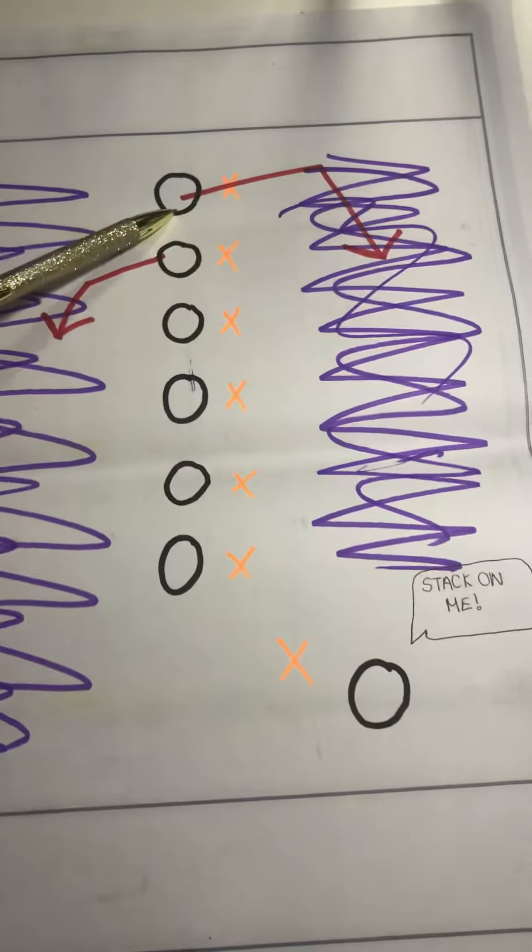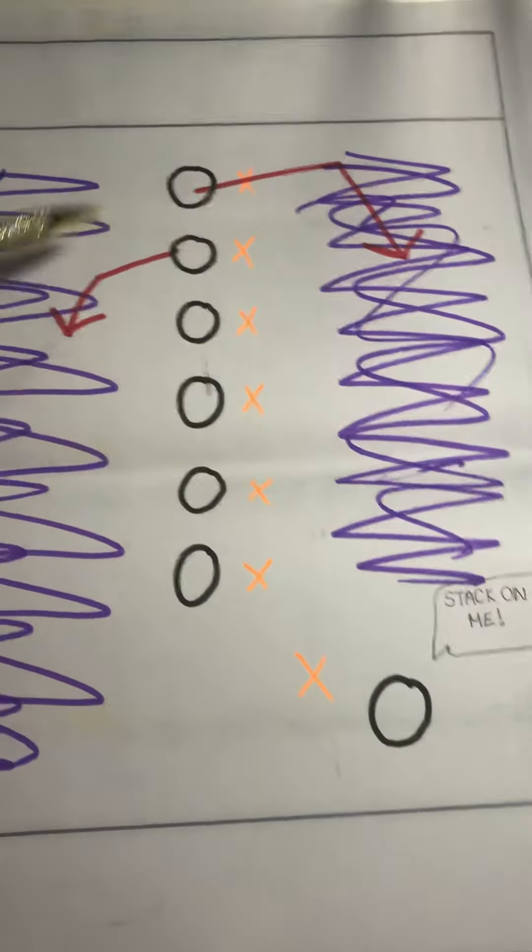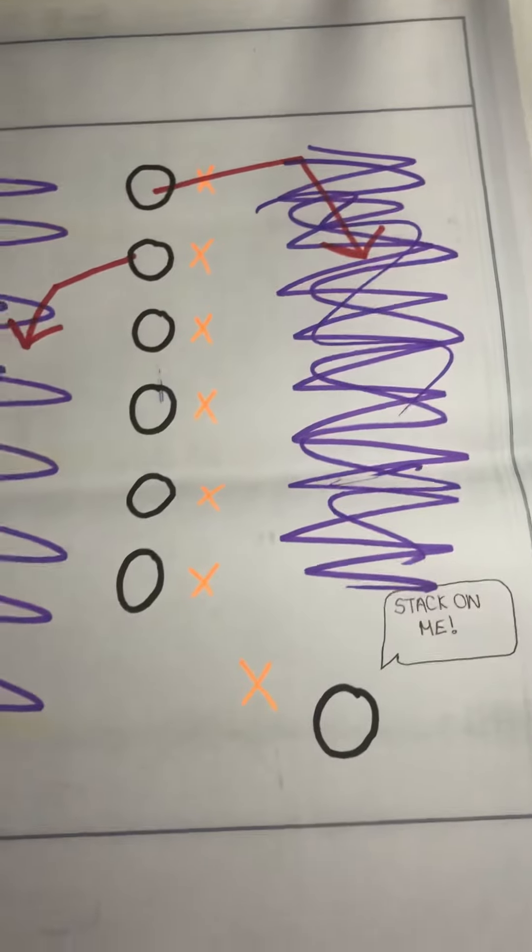For example, my top player here can cut into this area of space or my second player here can cut into this area of space.